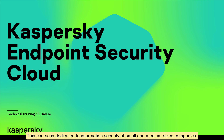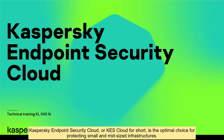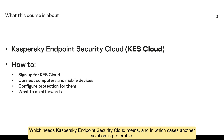This course is dedicated to information security at small and medium-sized companies. Typically, such a company has from 5 to 250 Microsoft Windows or macOS computers and Android or iOS mobile devices. Kaspersky Endpoint Security Cloud, or KES Cloud for short, is the optimal choice for protecting small and mid-sized infrastructures. Our course is dedicated to this product, and we will tell you which needs Kaspersky Endpoint Security Cloud meets, and in which cases another solution is preferable.